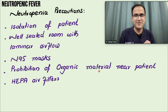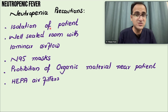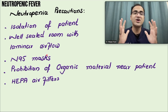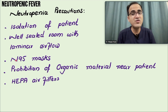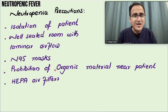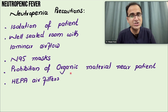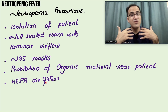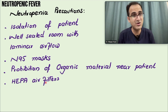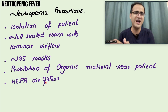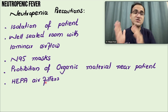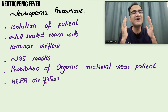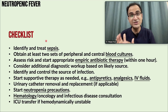Certain precautions must be taken in neutropenic patients. They must be placed in an isolation room — a well-sealed room with laminar airflow so there are no bacteria present. Doctors entering the room should wear N95 masks and aprons. Organic materials should be prohibited near the patient. HEPA air filters should be used to minimize contact with resistant bacteria, which are common in hospital environments.